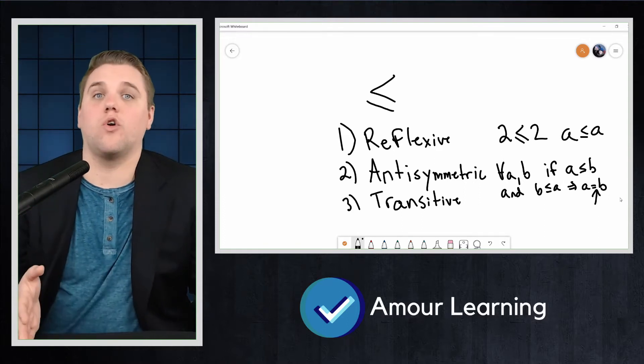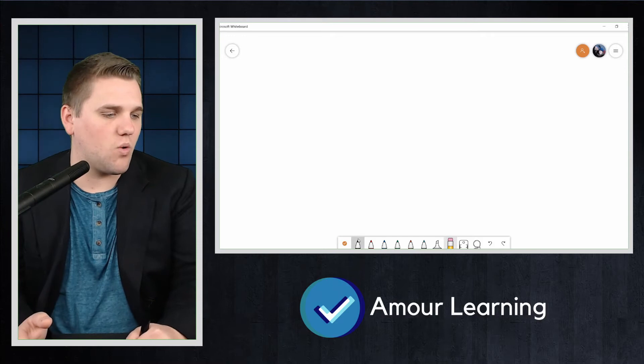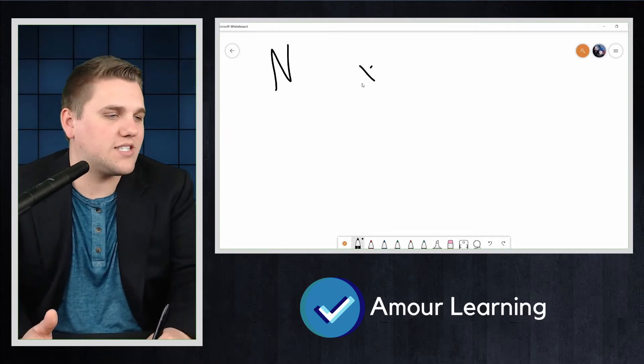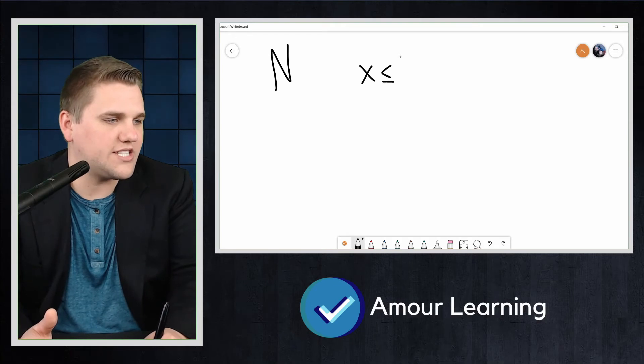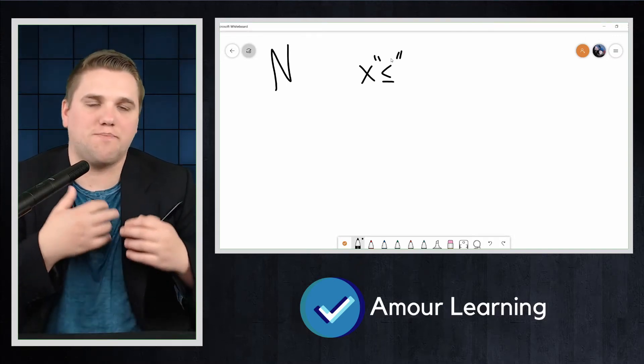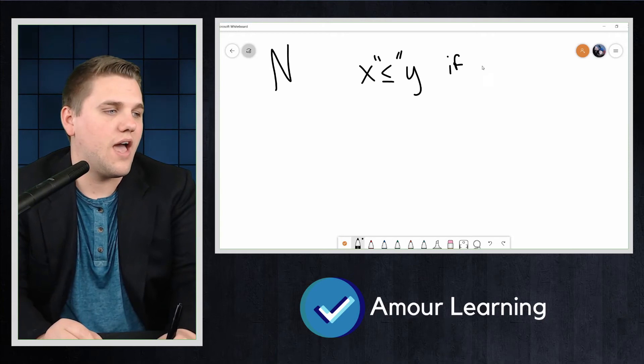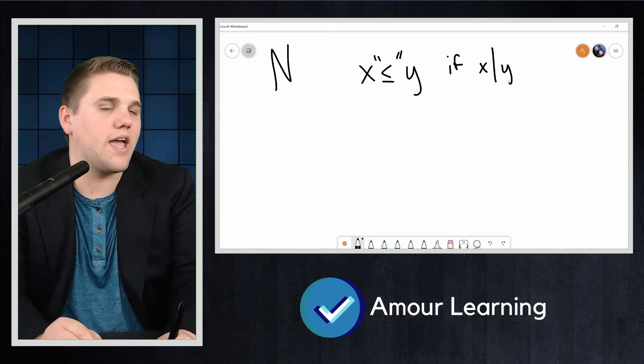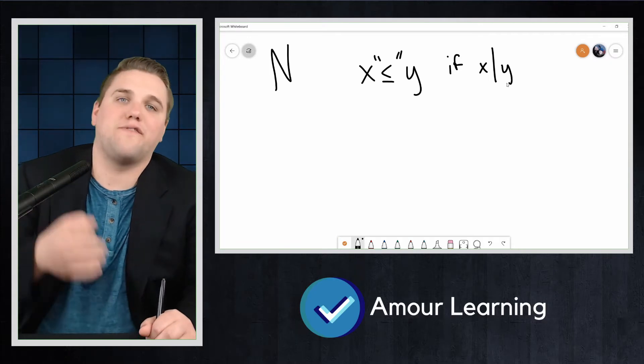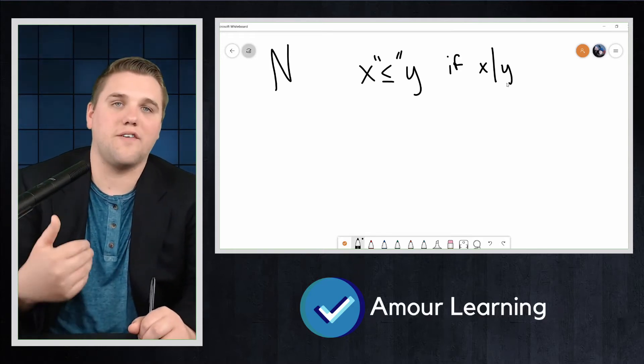Let's take a look at an interesting partial ordering of the natural numbers. So I'm going to clear this off. Our universe that we're working in is N, the natural numbers: 0, 1, 2, 3, and so on. We might say that X is less than or equal to, and I'll put quotes here to say this is not necessarily the same thing as less than or equals. This is just a partial ordering. We might say that X is less than or equal to Y, or smaller than Y, if X divides Y. And we put a vertical line to say that X divides Y. So like 2 divides 10, 5 divides 10, 1 divides 10, 10 divides 10. 7 does not divide 10 because 7 is not a factor of 10.